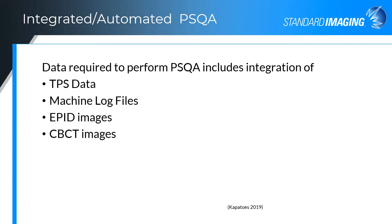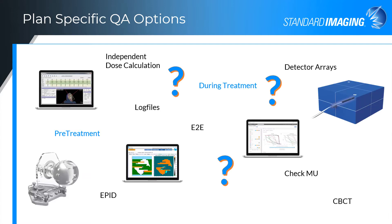As outlined by QA vendors in a 2019 AAPM presentation, performing QA requires that patient-specific data such as TPS data, machine log files and/or records, EPID images, and CBCT images are available for independent QA. I would encourage the physics community to ensure LINAC vendors continue to allow access to this data for automated independent QA. There are many different types of plan-specific checks that can be performed: a pre-treatment plan check using 1D, 2D, or 3D independent dose calculation software to check monitor units, or detector array measurements. During-treatment QA can be employed using EPIDs, log files, and cone beam CTs. End-to-end testing is also quite important.